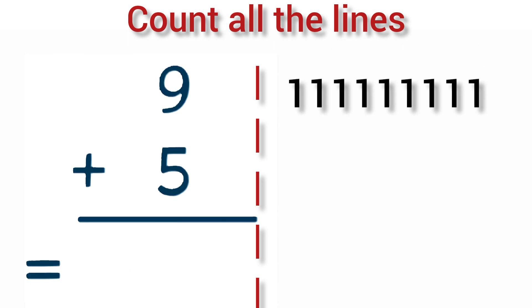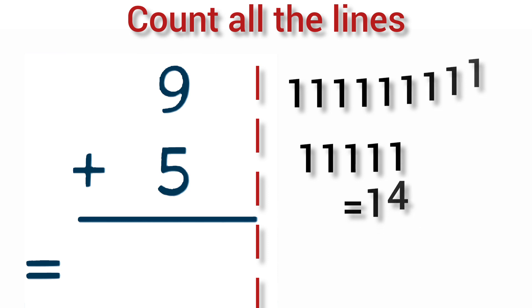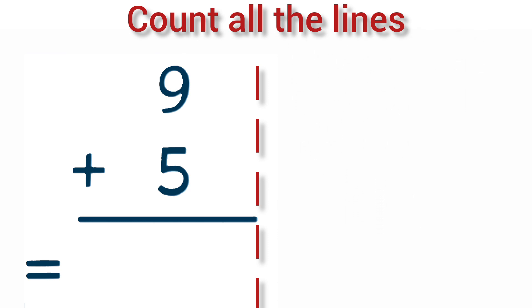Add 9 plus 5. 9 lines plus 5 lines is equal to 14. So, 9 plus 5 is equal to 14.